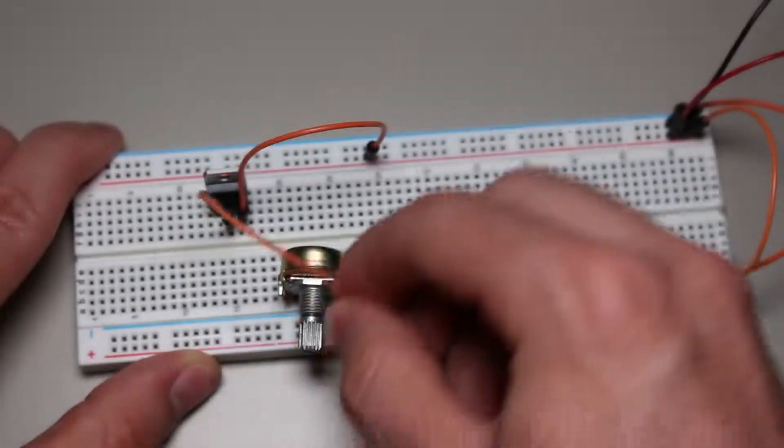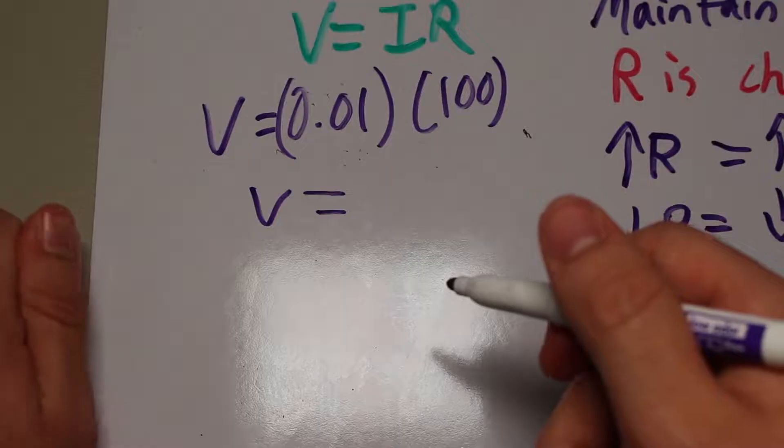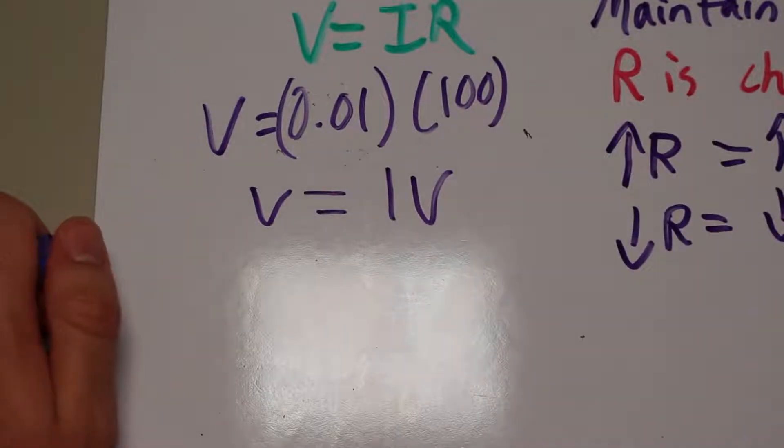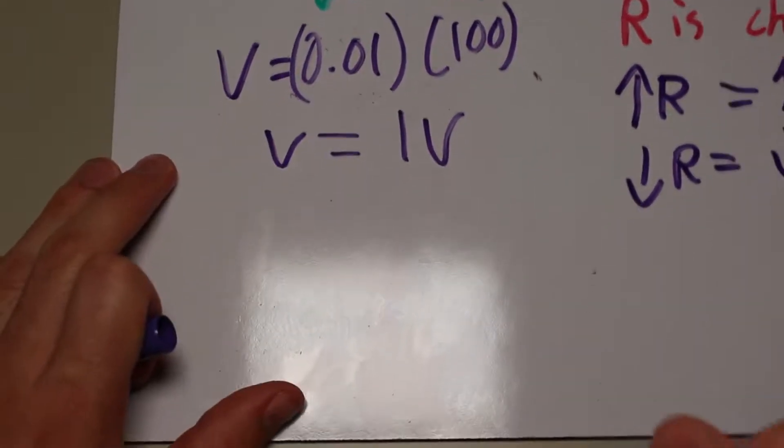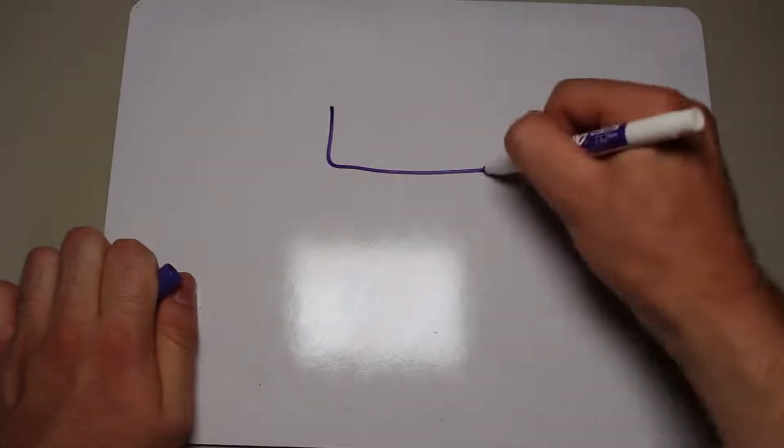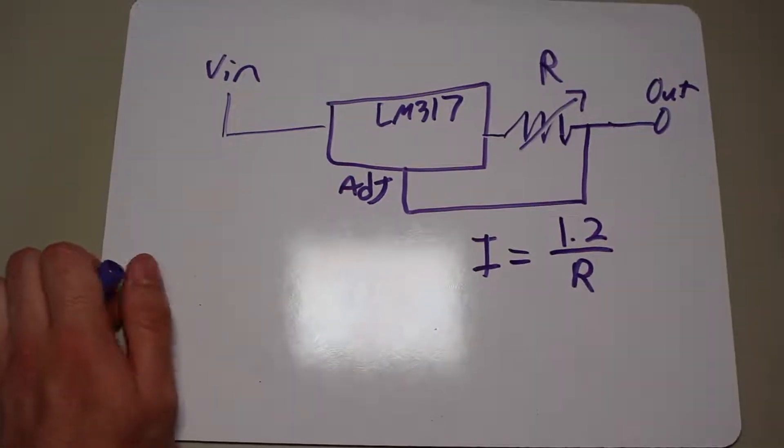This works because the resistor will generate a voltage drop across itself, and the adjust pin will take that voltage drop to drive the output. The bigger the load, the lower the voltage, so that the current is maintained. In fact, the equation for this setup is the current equals 1.2 divided by the resistor.